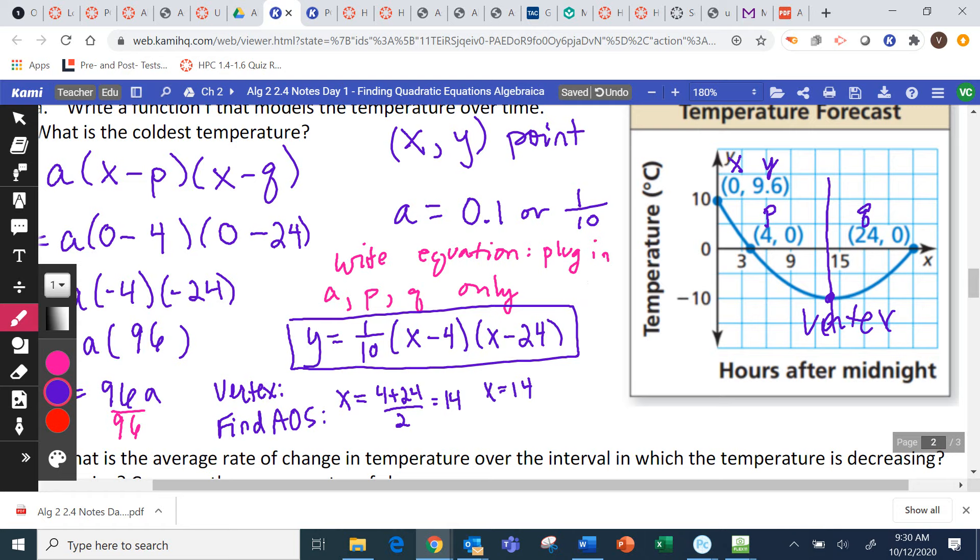So, that is the first part of the vertex. Is that the number I need? It's not the number I need. I need the y-value. So, how do I find the y-value of the vertex? Right. We take that 14, we're going to plug it into the equation and find our y-value. So, I'm going to have 1 tenth times 14 minus 4 times 14 minus 24. So, 1 tenth times 10 times negative 10. Looks like we got negative 10 degrees. Does that seem right for our graph? Could it be at negative 10 degrees?